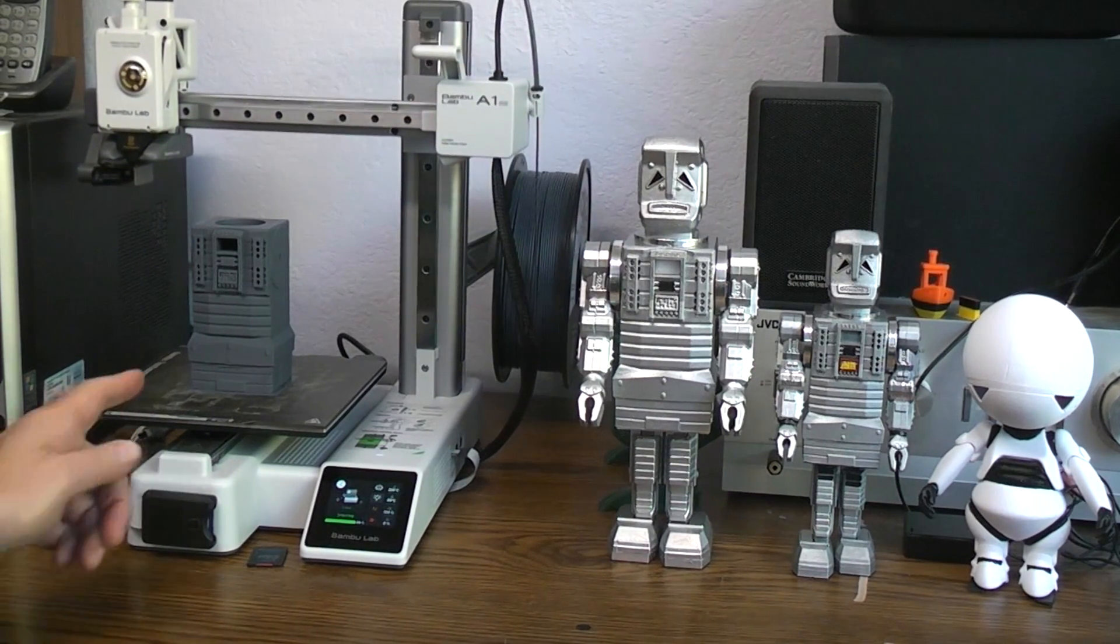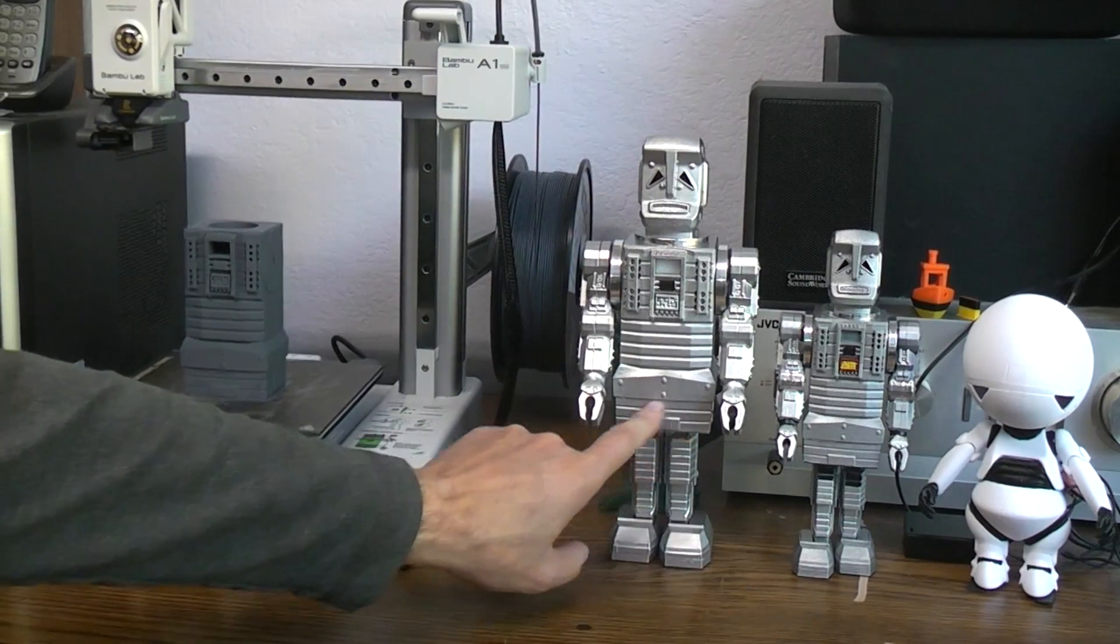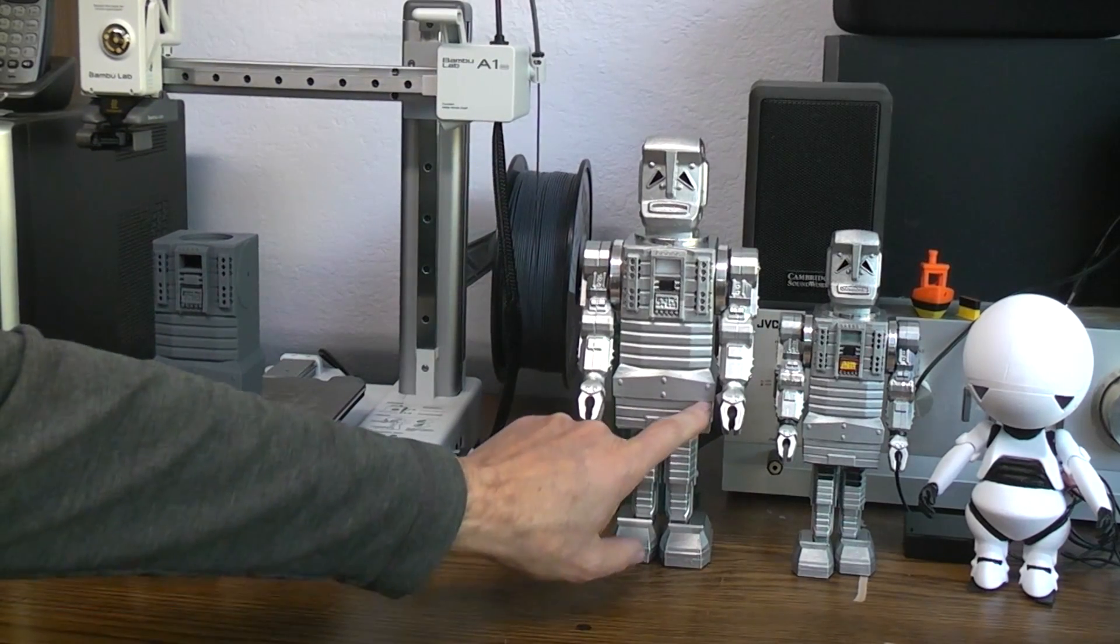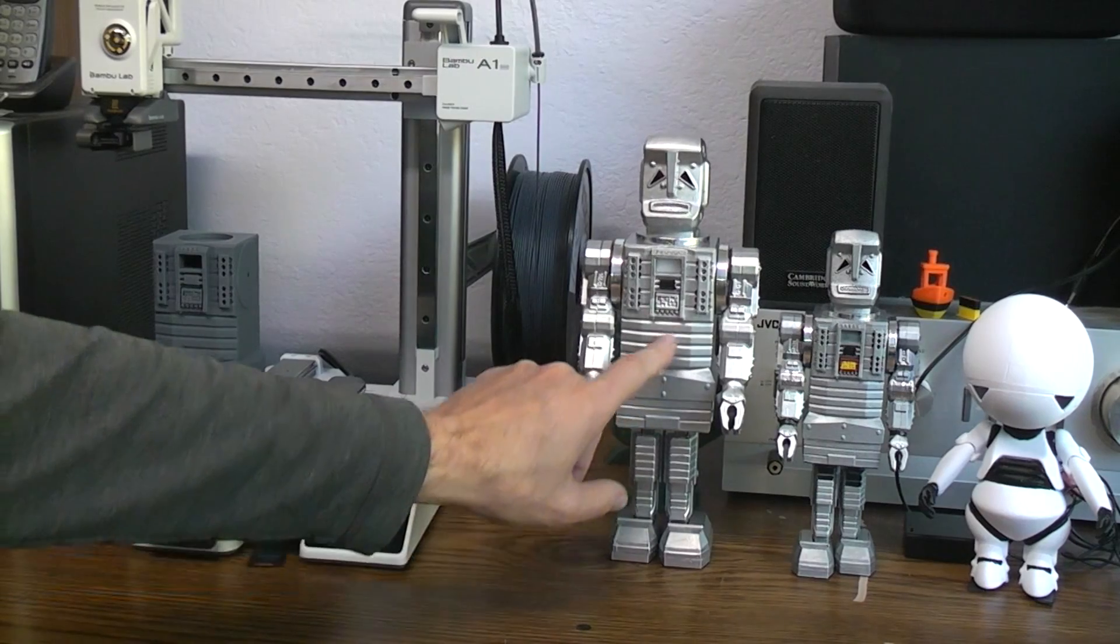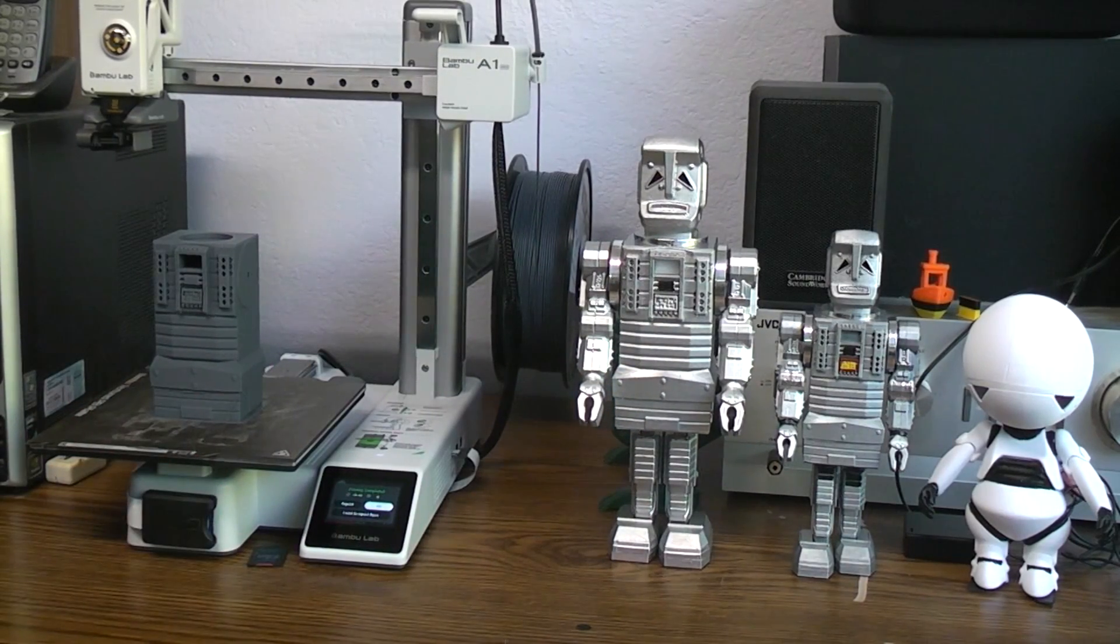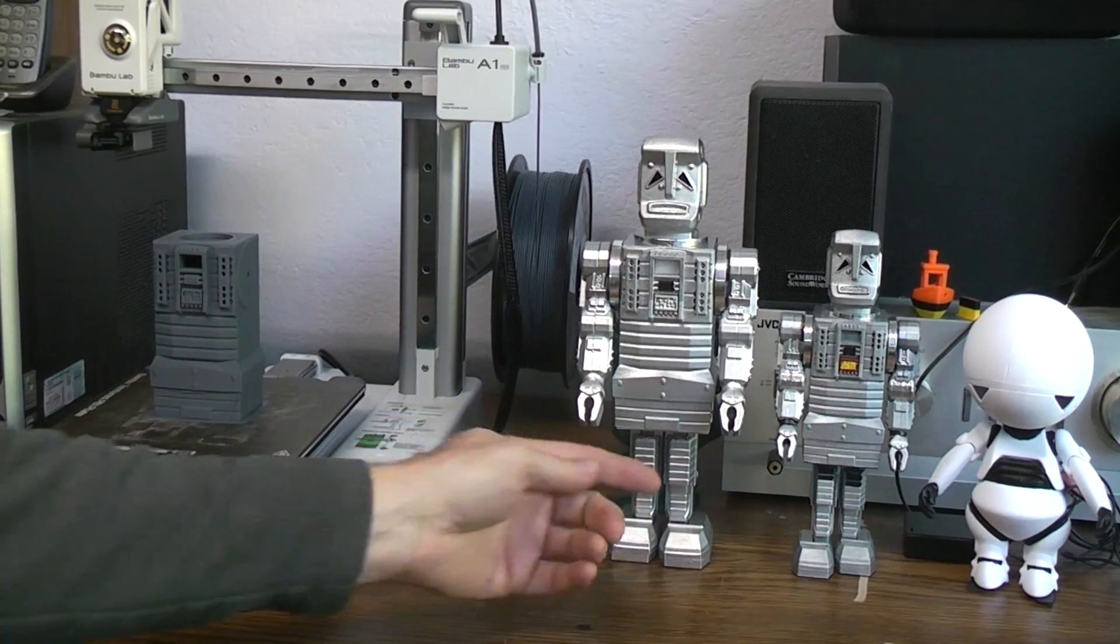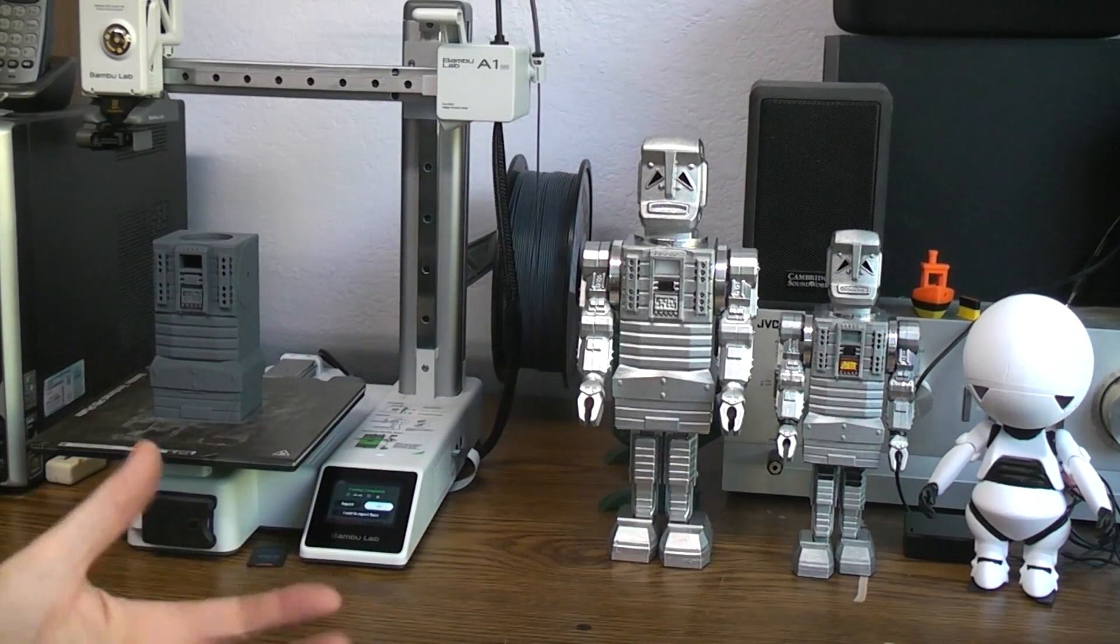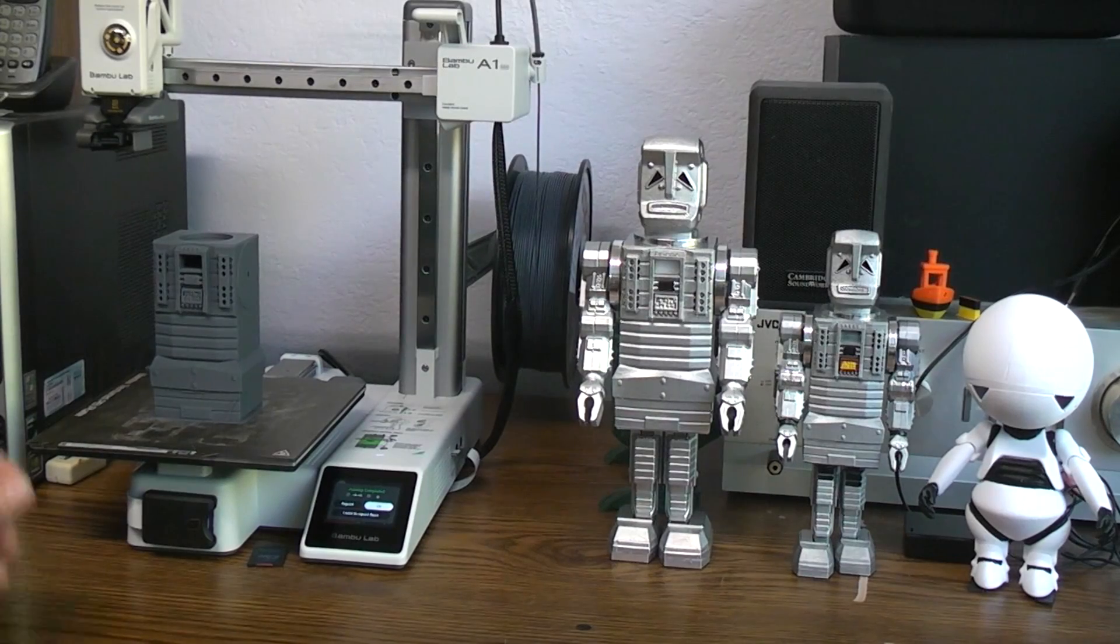Now one thing I didn't bother to support on either of them was this little lip that's under the body here. So I expected a little bit of droopage there and a few other places because it's easier to clean up than it is to spend all the time running supports up to that point. Saves time but it's also a waste of filament.